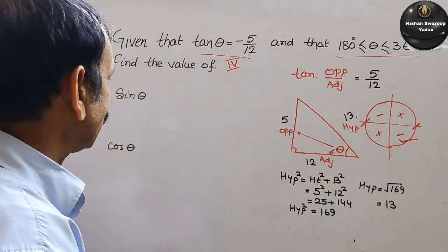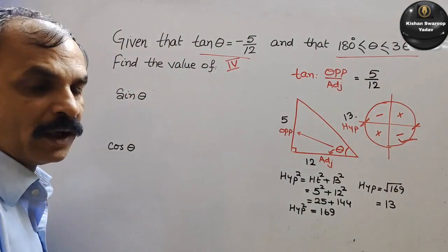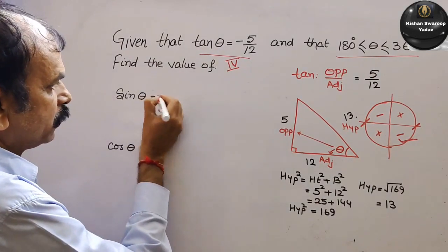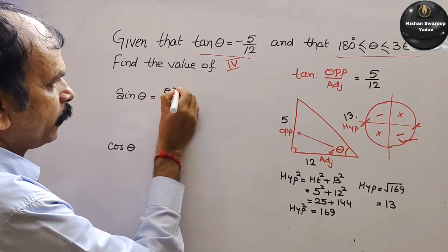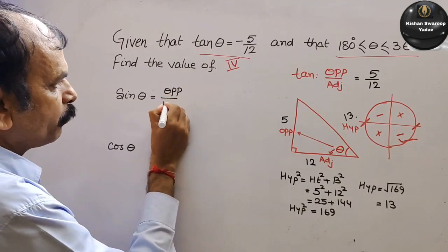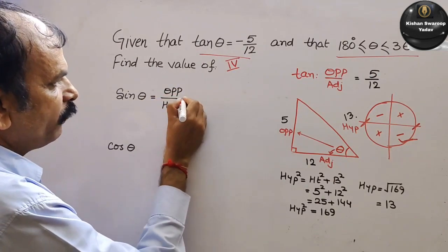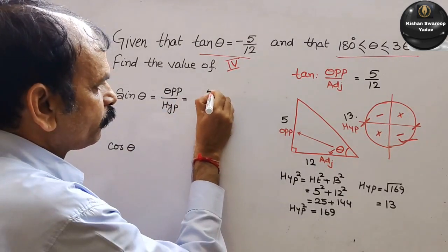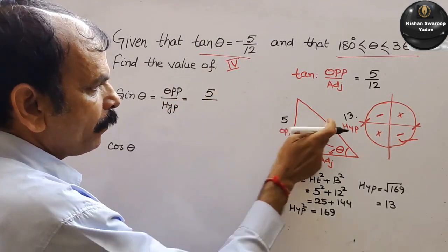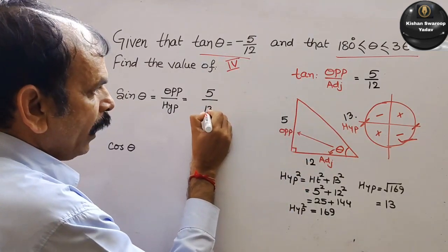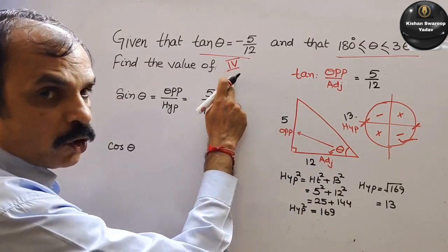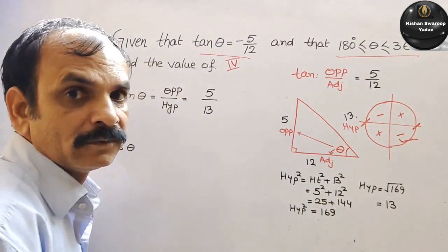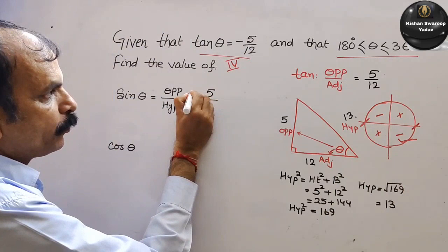Now just write there sine theta. What is sine? Sine is opposite by hypotenuse. Opposite by hypotenuse. Just we will write the value first. Opposite is 5 and hypotenuse is 13. And they are talking about the 4th quadrant. 4th quadrant sine is negative. So here we will simply put minus.